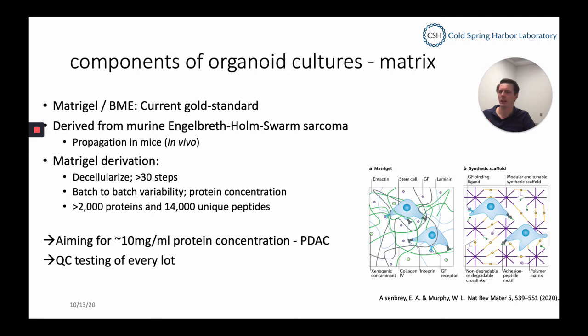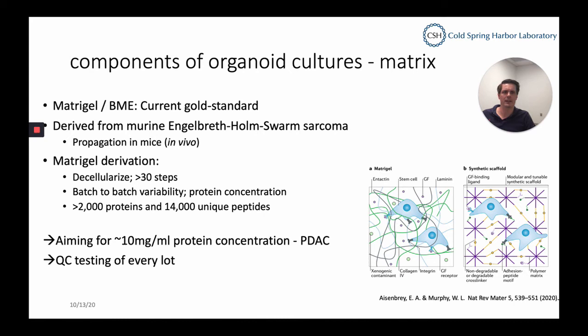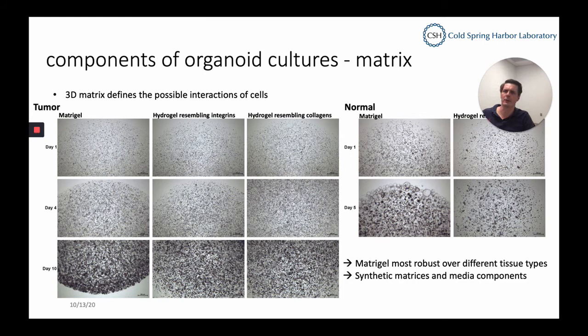We aim for a concentration of 10 milligrams per milliliter of Matrigel, based on PDAC. If you have a soft tumor, you need less protein concentration; for a harder tumor, like a bone tumor, you may want a higher concentration. We keep qualifying each new Matrigel lot we receive. As noted in a recent Nature Reviews Materials publication, using Matrigel means working with a less well-defined matrix compared to a synthetic scaffold — and a synthetic scaffold could boost success rates and make methods more uniform worldwide.